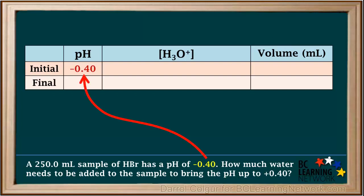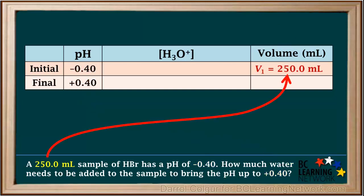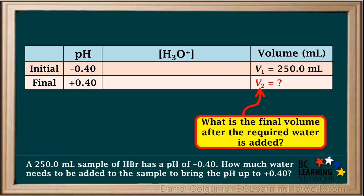The initial pH is negative 0.4, and the final pH is positive 0.4. The initial volume, which we'll call V1, is 250 milliliters. Given this information, we can find what the final volume of the solution has to be in order to have the desired pH of positive 0.4. We'll call this the final volume, V2.